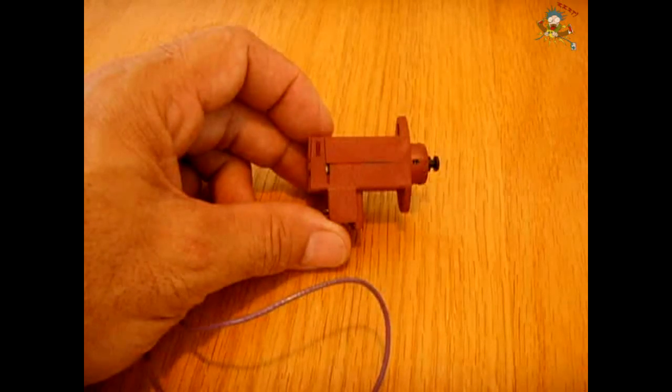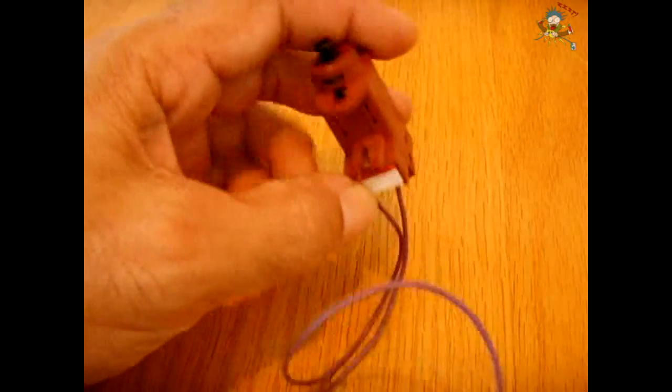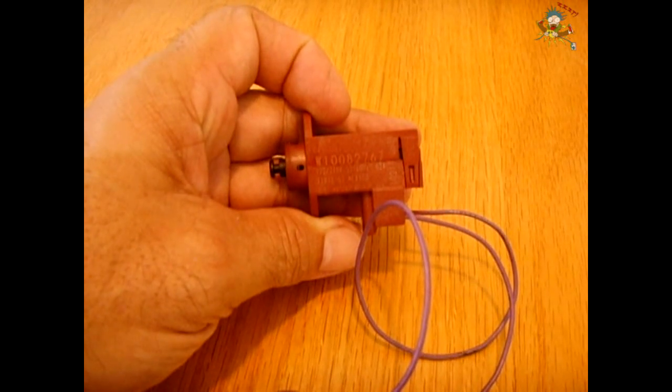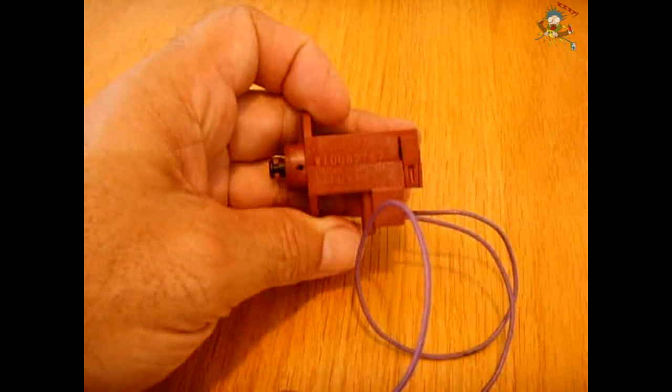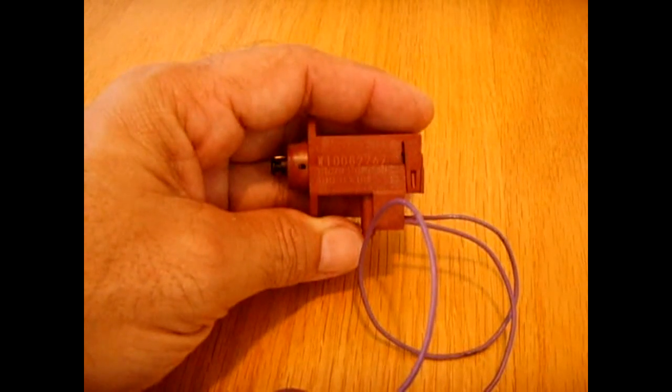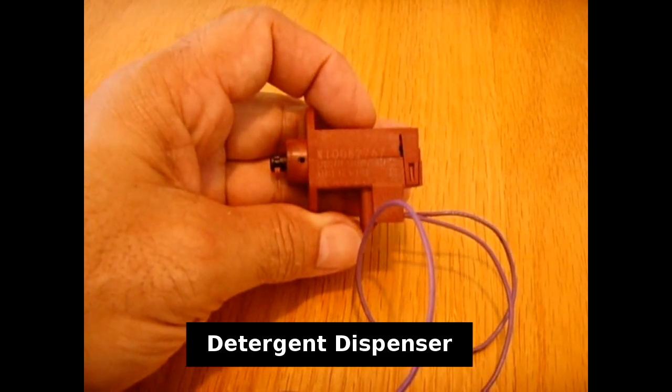The wax motor you see right here was removed from a dishwasher. If you have a scrap dishwasher laying around, you could disassemble the door and usually these are used in the area around the soap dispenser.